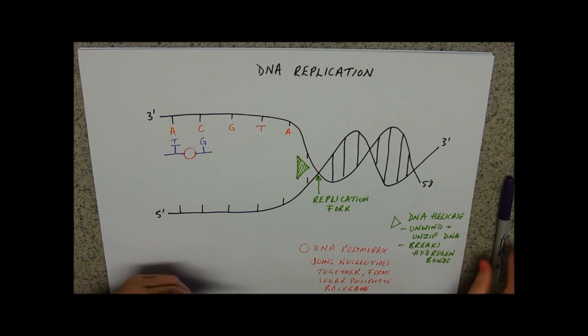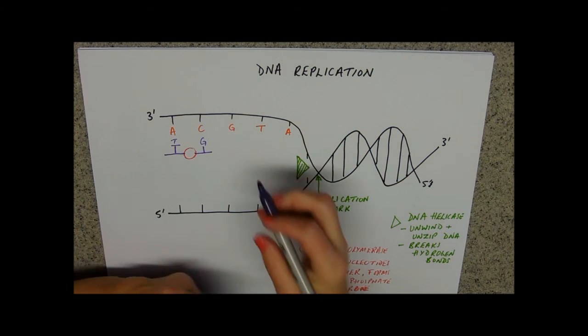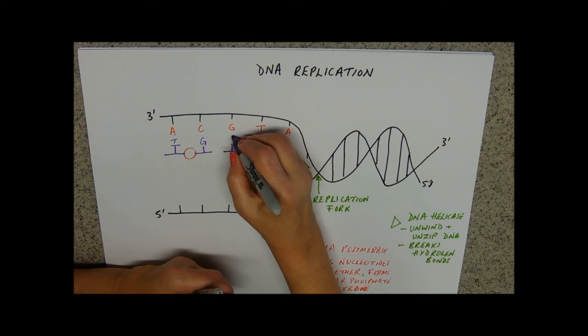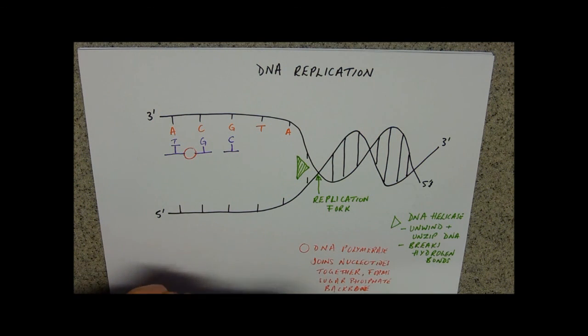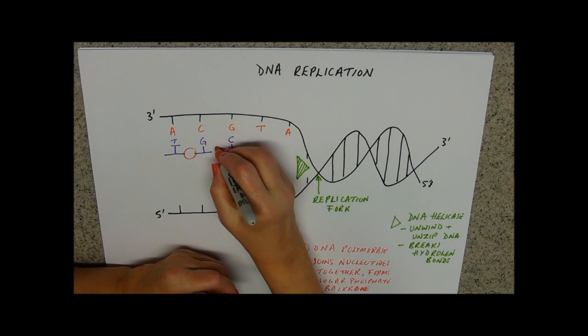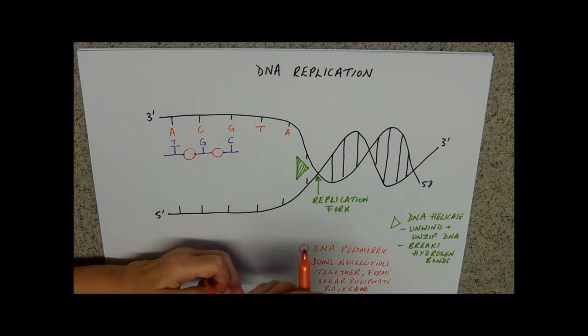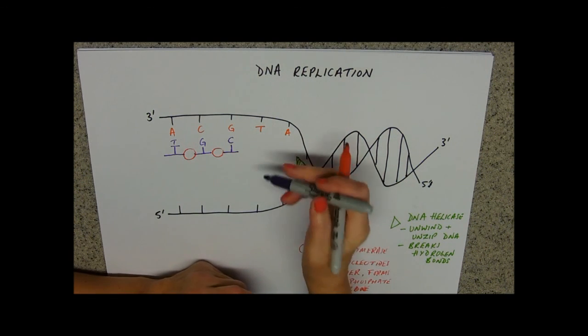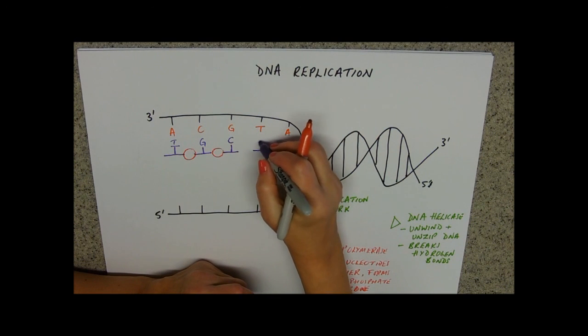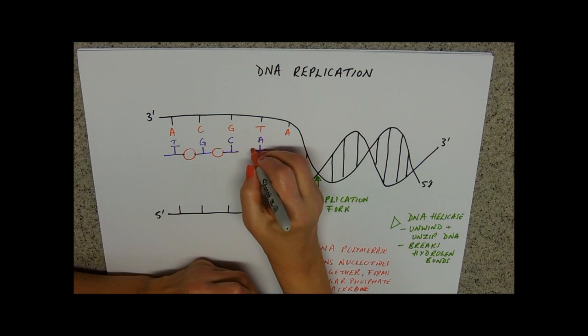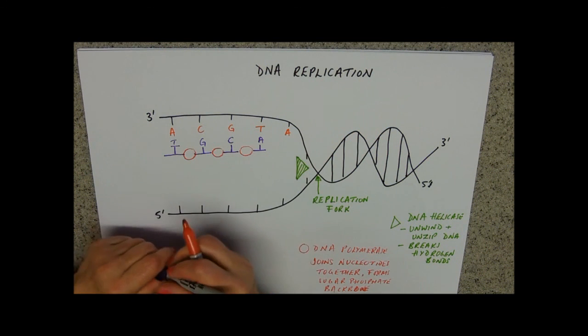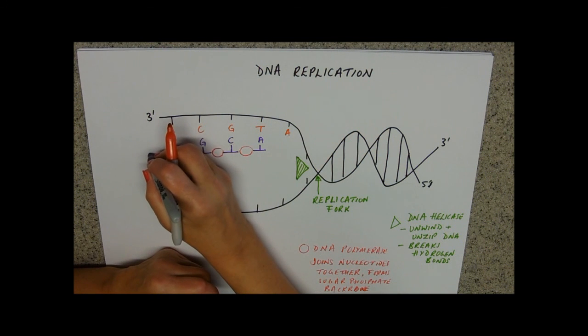So it joins those two together and then it'll work its way up and join these two together. And it will just follow DNA helicase up.